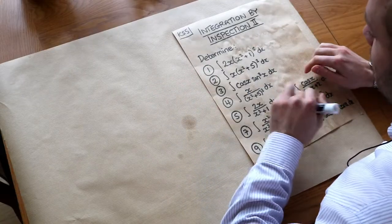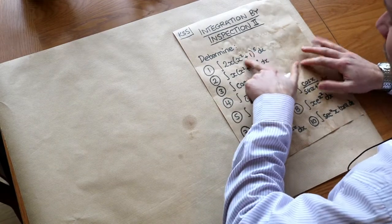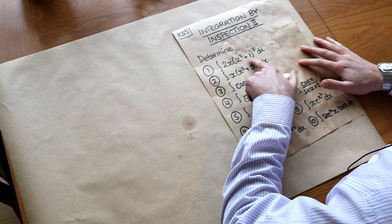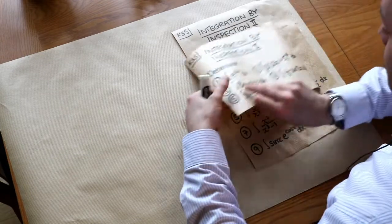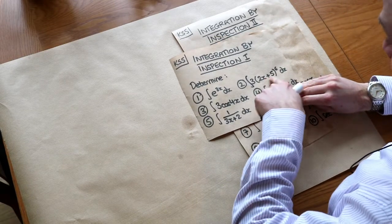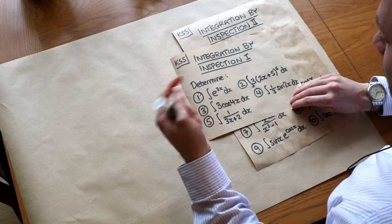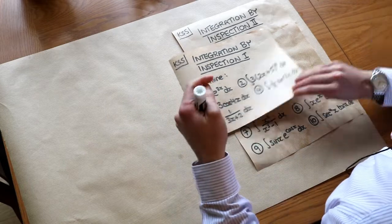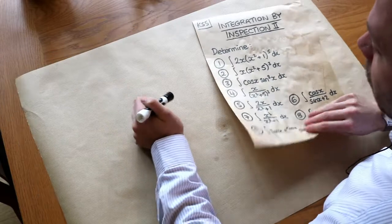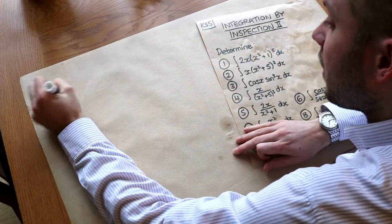For these harder ones, that same technique does not work, and the reason is that this inner function is not linear — it's not something·x plus something as we had with all of these. Those inner functions were linear: 3x, 4x, 3x + 2, etc. But x squared plus 1 is clearly not linear. However, we can still use this consider-and-scale method.